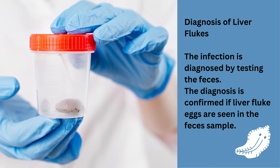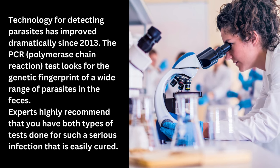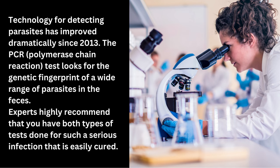The infection is diagnosed by testing the faeces, also known as a stool test. The diagnosis is confirmed if liver flukes are seen in the faeces sample. Ova and parasite (O&P) stool examinations for liver fluke eggs is the only available way to diagnose liver fluke infection. Often more than one stool sample may be needed to identify the eggs. Technology for detecting parasites has improved dramatically since 2013. The PCR test looks for the genetic fingerprint of a wide range of parasites in the faeces. Experts highly recommend that you have both types of tests done for such a serious infection that is easily cured.